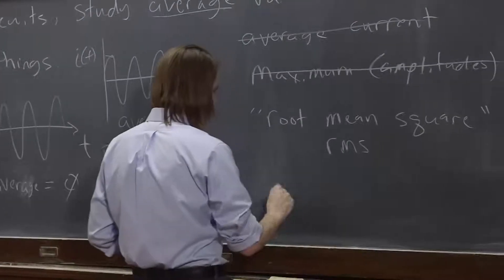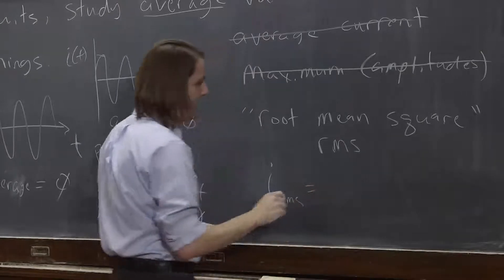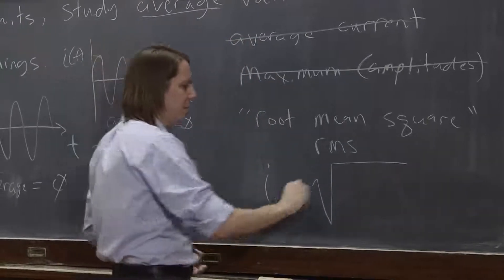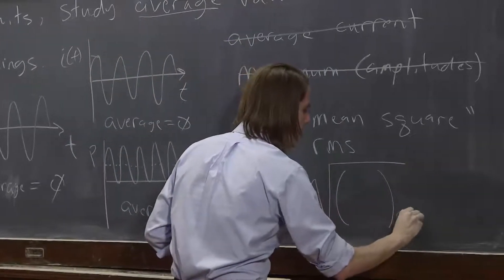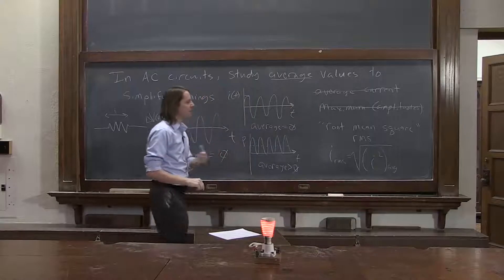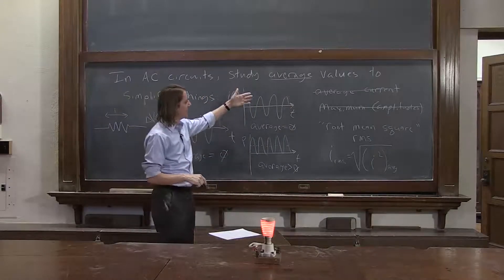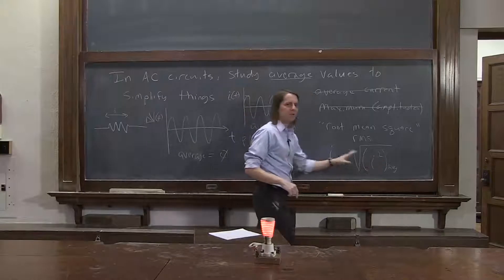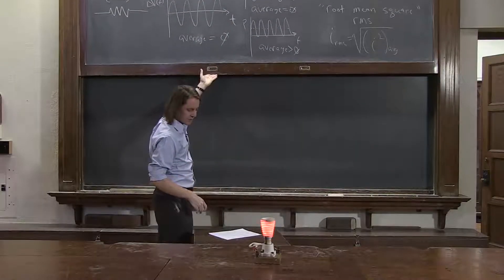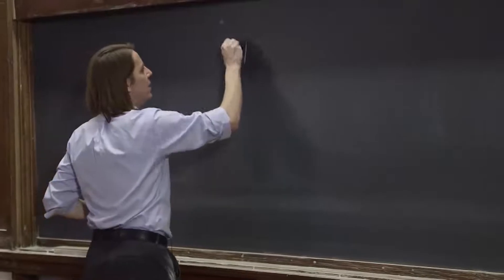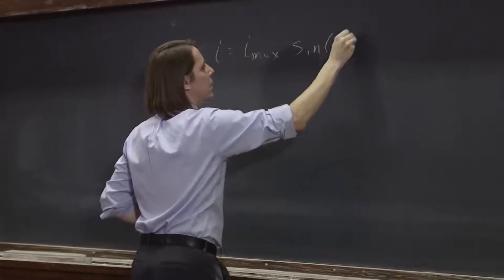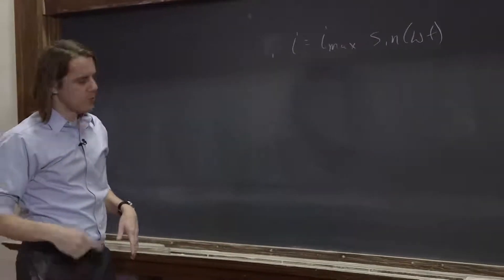We would write it then. The I RMS would be, it is literally what it says. It is the root, the square root of the mean, the average, and square. So you square it. You take the instantaneous oscillating value. You square it. That way it's always positive. You take the average of it. And then you want to get back to the original units. So you take the square root. Let's see what it is for a sinusoidally oscillating current. If I is I max sine omega T.